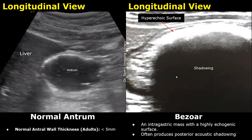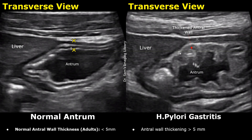Here is a case showing gastritis. Normally, ultrasound is not performed for such cases. The main feature of gastritis is increased wall thickening. This is how a normal antrum appears — the normal antral wall thickness in adults is less than 5 mm. This image shows a case of H. pylori gastritis: you can see the increased thickness of the antral wall, which measures more than 5 mm.